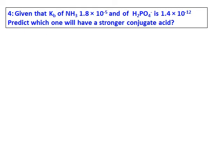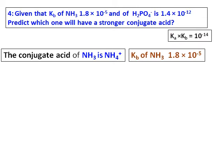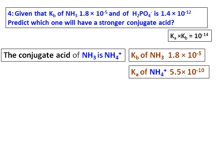Given that Kb of ammonia is 1.8 × 10⁻⁵ and that of H₂PO₄⁻ is 1.4 × 10⁻¹², predict which one will have a stronger conjugate acid. So, the conjugate acid of ammonia is NH₄⁺, and the Kb is given. And using the value of Ka times Kb equals 10⁻¹⁴, we can get the value of Ka of NH₄⁺, and that's calculated as 5.5 × 10⁻¹⁰.